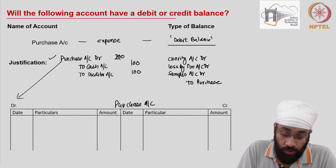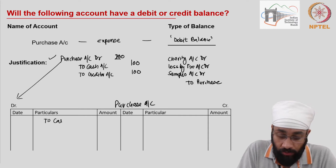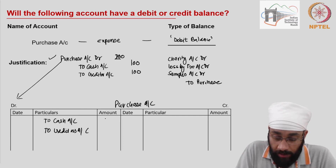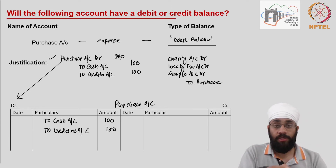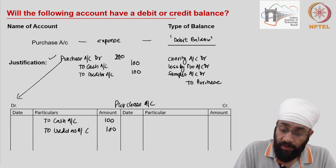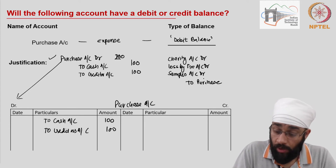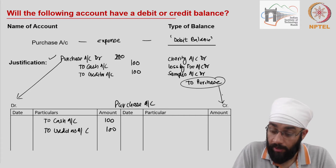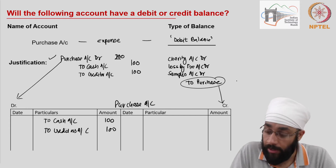This is the purchase account. On the debit side, you show all purchase transactions: cash account and creditors account, 100 each, so 200 is the total on the debit side. On the credit side, you are going to write the entries where purchase is being credited.